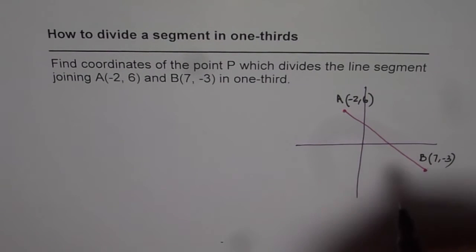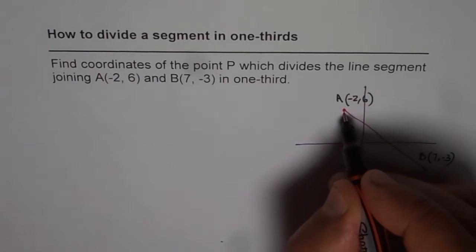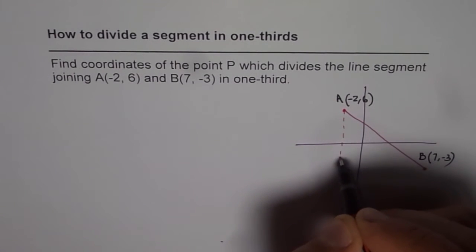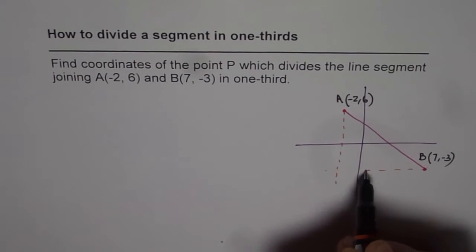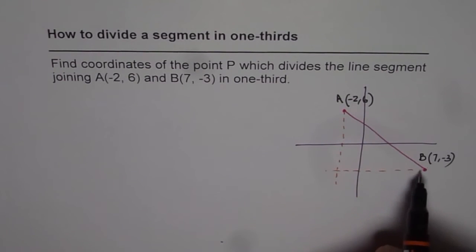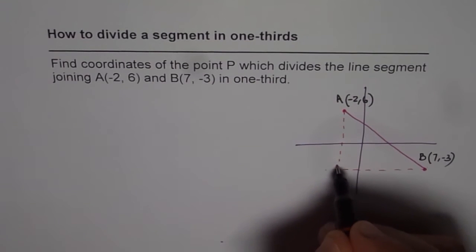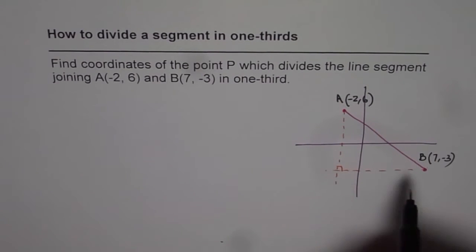So what we can do is, let us drop a perpendicular vertical line from A. This is the part of construction, and we will draw a horizontal line from B. If we do that, we get a right triangle. Now, in this triangle, what are our sides?